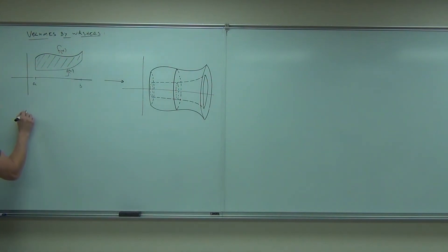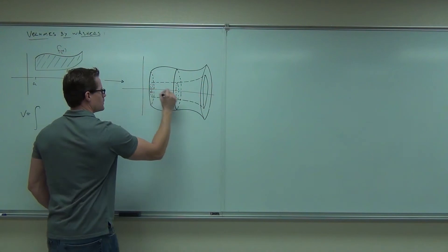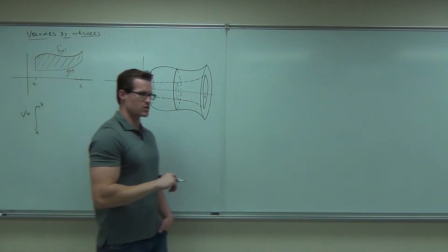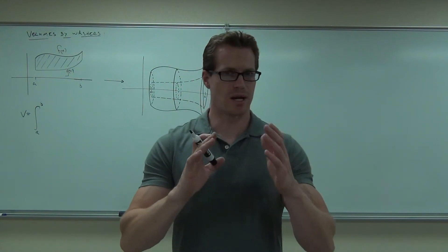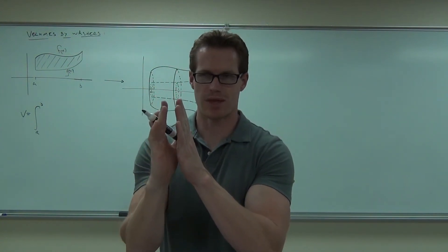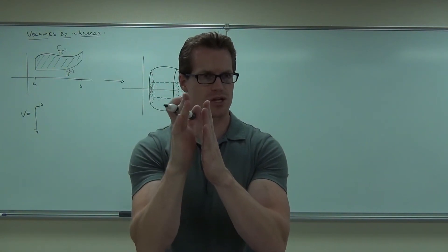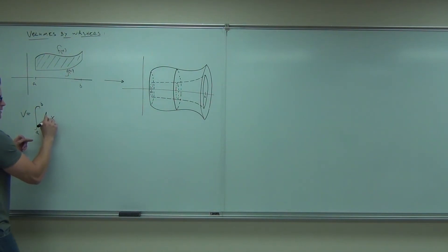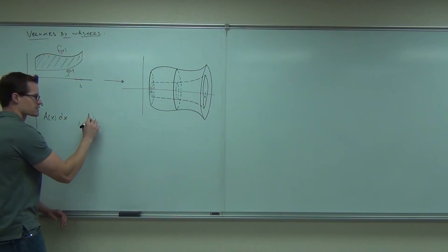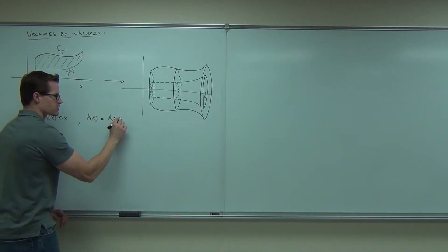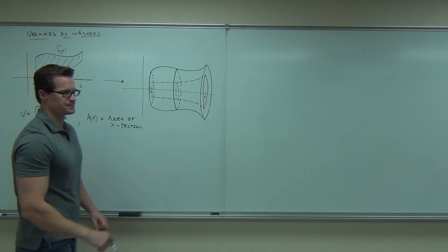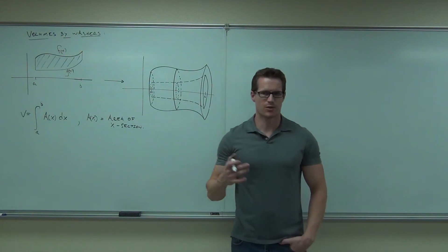The volume should still be some integral from A to B. How we did the volume of any solid is we integrated the surface area of our cross-section. Remember that? We took the surface area of our cross-section. We integrated the surface area of our cross-section from A to B. That was basically it. So we still have this idea. Integrate from A to B the function A of X, DX, where A of X is the area of the cross-section. That seemed pretty easy.